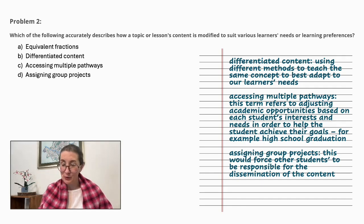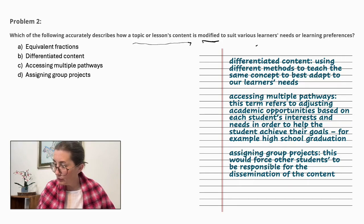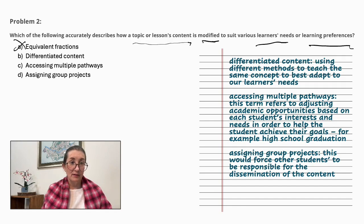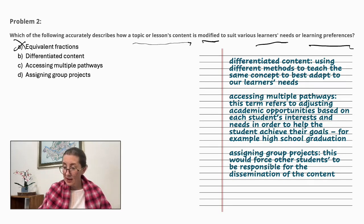Let's look at the question again. Which of the following accurately describes how a topic or lesson content is modified to suit the learner's needs or learning preferences? Equivalent fractions is a topic, so we can eliminate that right away. Differentiated content. This is using different methods to teach the same concept to best adapt to our learner's needs. The answer would be B.